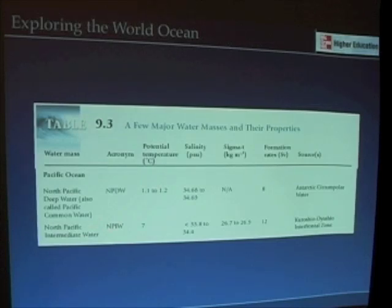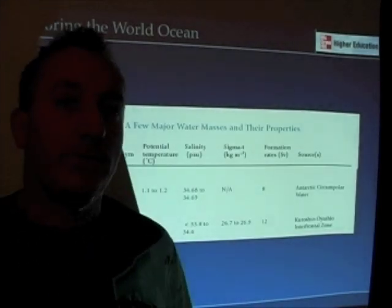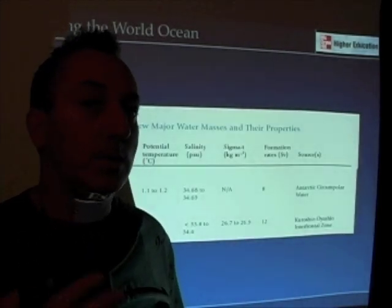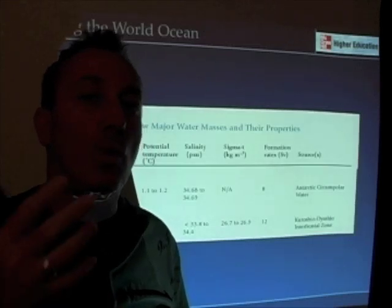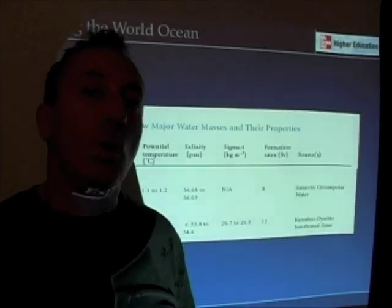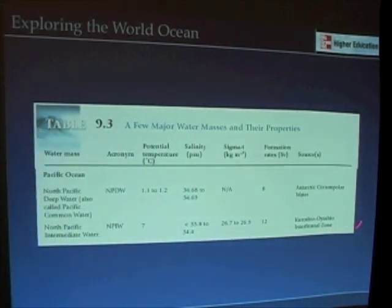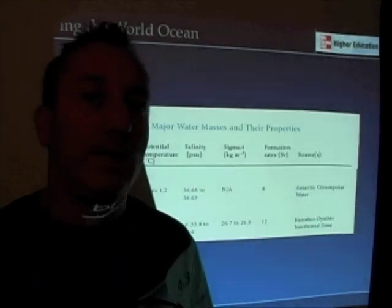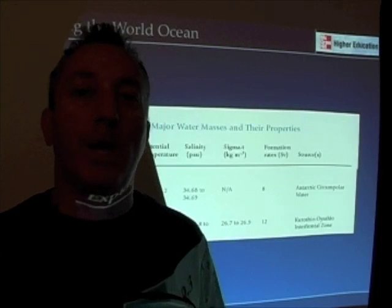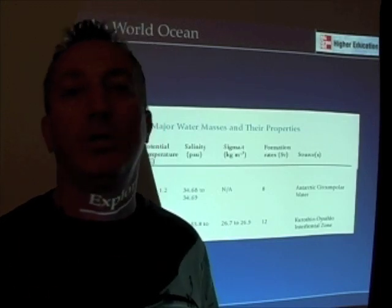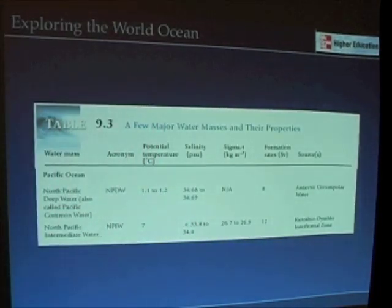North Pacific intermediate water is a little bit above that, produced in great quantities, and is also an extremely important water mass. These are subtle details, more important for physical oceanography students, but the key point is we can go out in the ocean, identify different water masses, tell essentially where they come from, and learn something about how these water masses influence deep ocean circulation and ultimately climate.